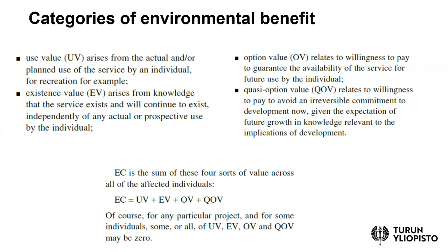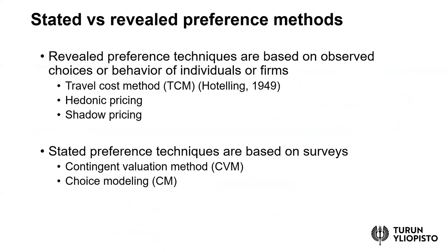The next question is how we estimate these types of environmental benefits or costs and, particularly, their monetary values. We can classify the approaches known in the literature into two broad streams. The first is called revealed preference techniques, which are based on observed choices or behavior of individuals. Three examples are the travel cost method, which goes back to Harold Hotelling's work in the late 1940s, hedonic pricing, and shadow pricing. These techniques are discussed in the next video lesson, 9b.